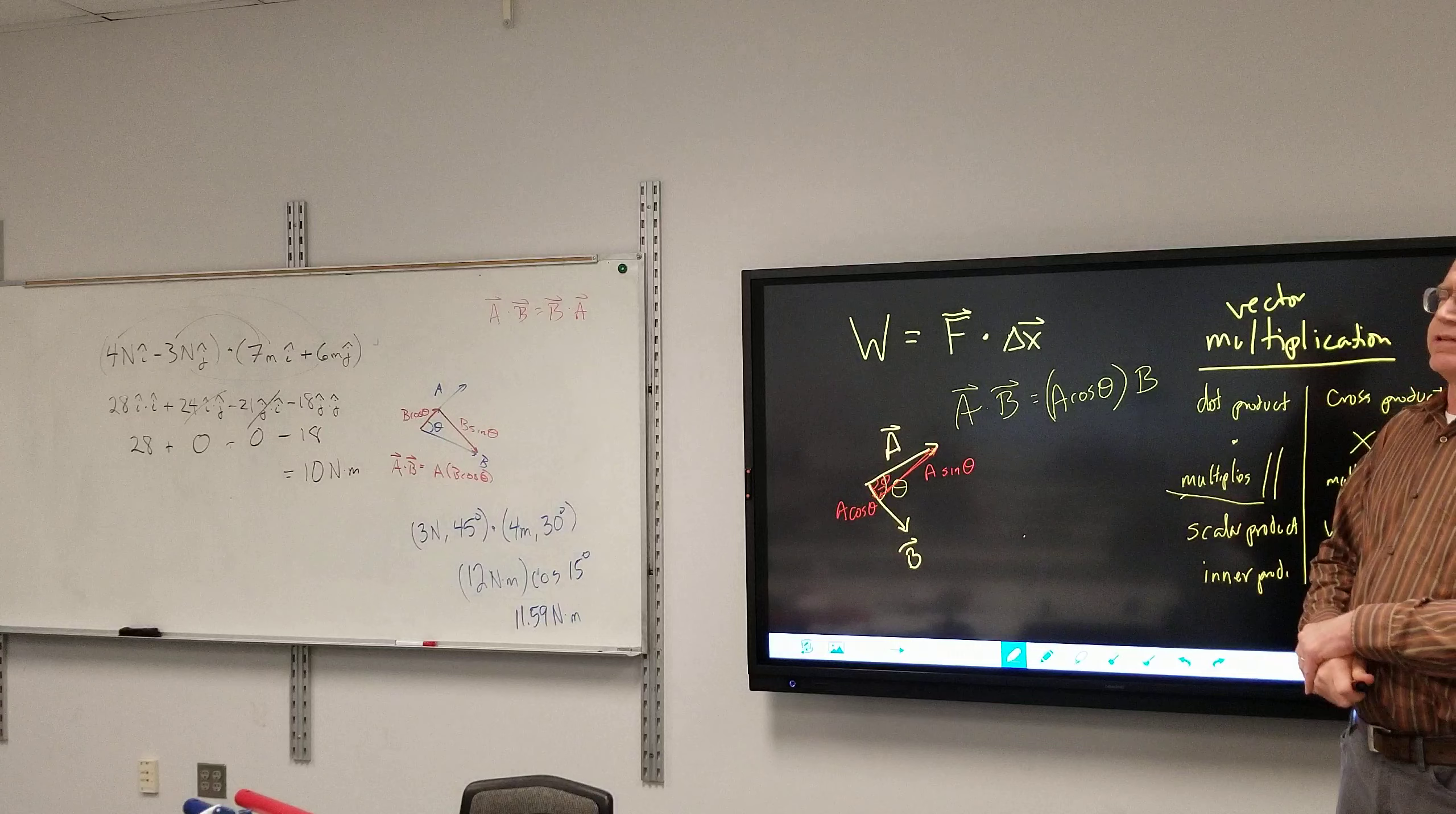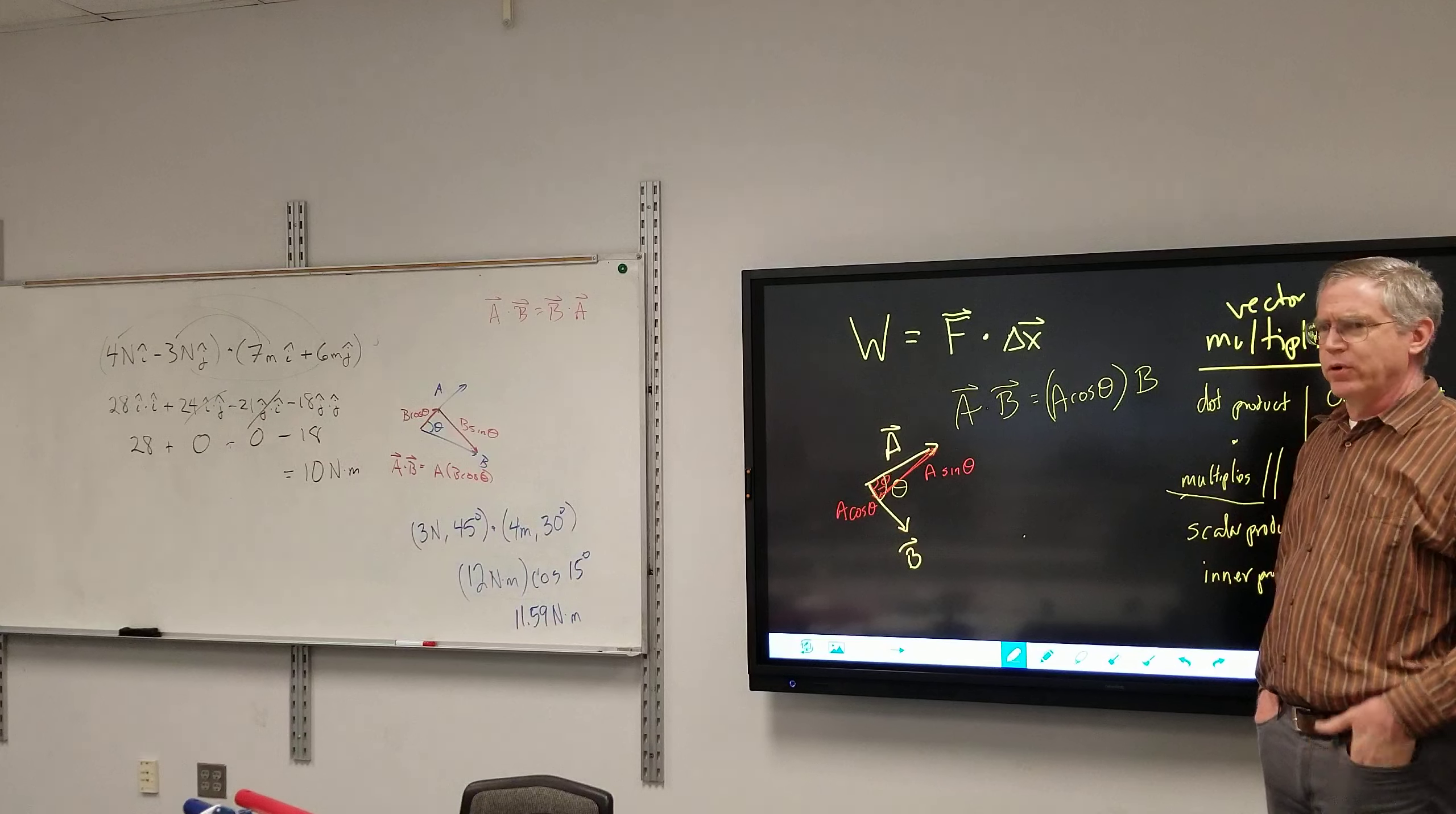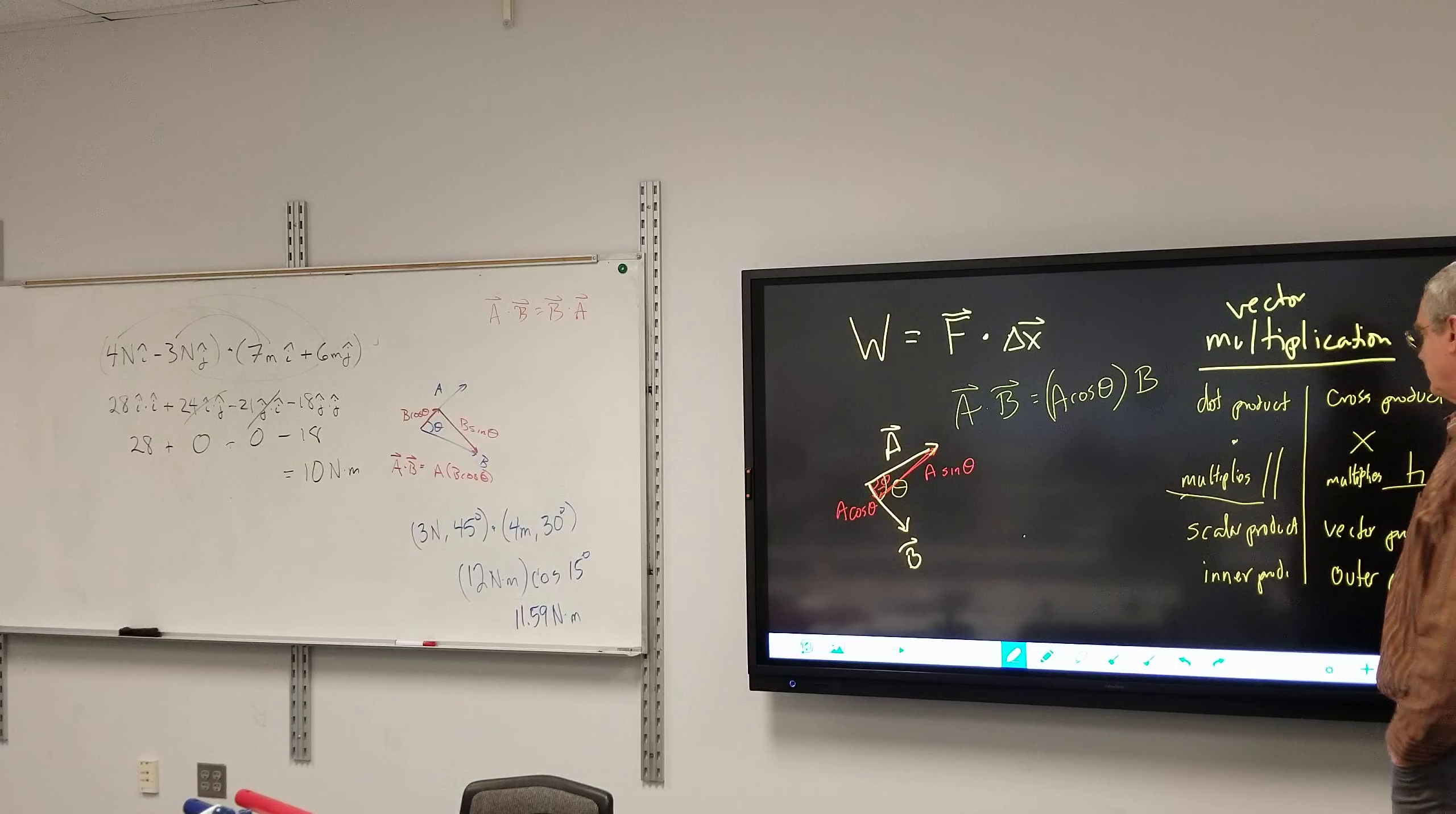Now if you have one vector in polar form and one in rectangular form, you need to convert one of them to the other form so that you can use one of these two methods, or have written a program in your calculator to handle it. Questions before we bring it back to physics? This being math so far.